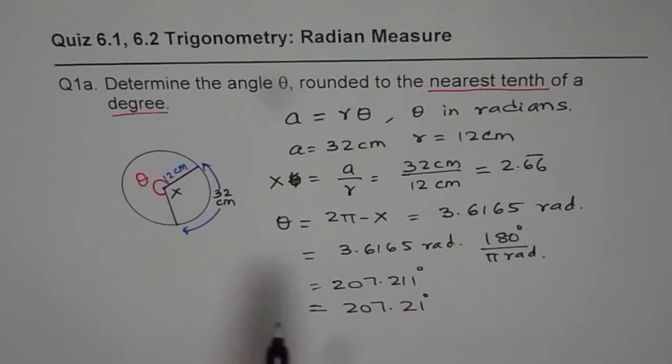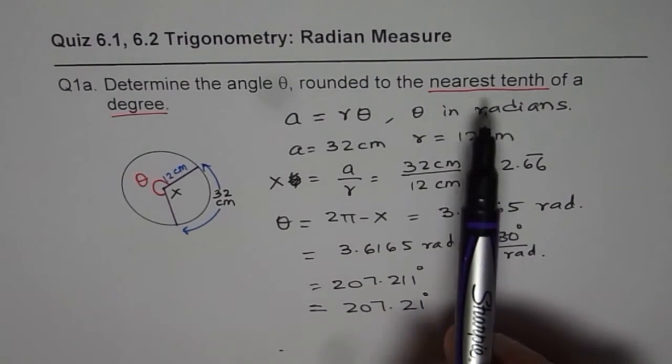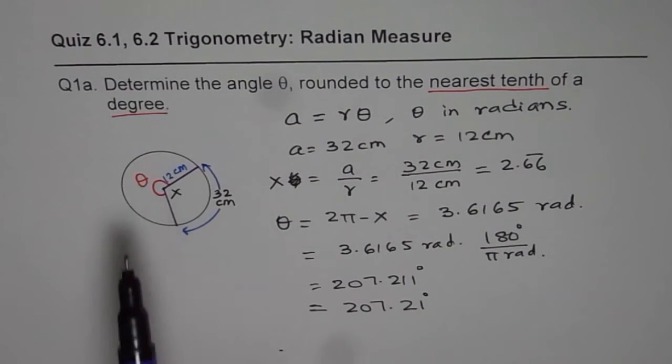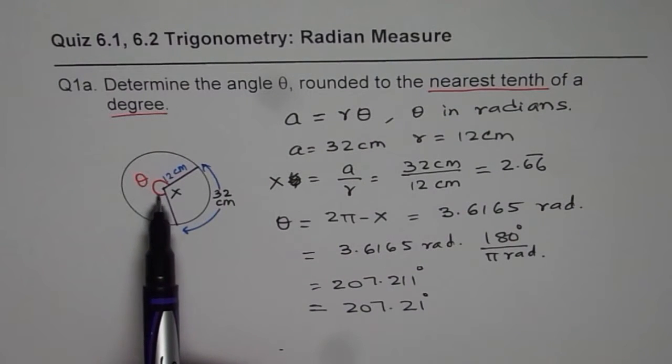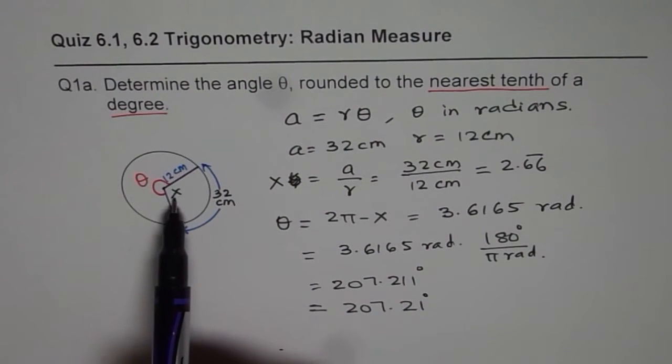First thing is, make a note that you need to give the answer in degrees, and round it to the tenth place. And the angle is that exterior kind of an angle, not that interior angle. So let us assume that the interior or subtended angle is x.